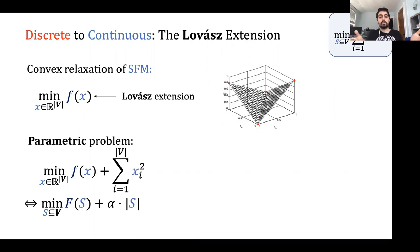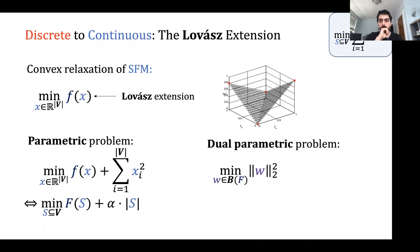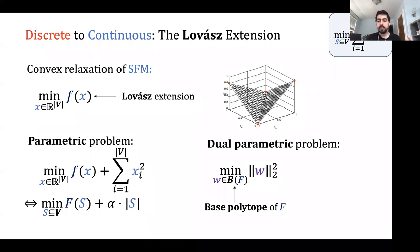The parametric problem translates back to the discrete world as: if you can solve this parametric problem, you can solve the submodular function minimization plus α times cardinality of S, for all α simultaneously. We focus on the dual problem: minimize the squared L2 norm with W in the base polytope of F. If we solve this dual, we can solve the original problem.